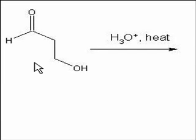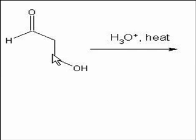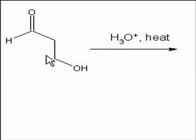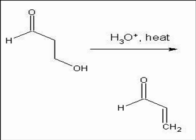To notice here is that we have a beta hydroxy carbonyl compound. This is the alpha position, this is the beta position, and when these compounds are heated, either in acid or in base, we get an elimination reaction — we lose water between the alpha and the beta position. So in this case the product would be this: an alpha beta unsaturated aldehyde.